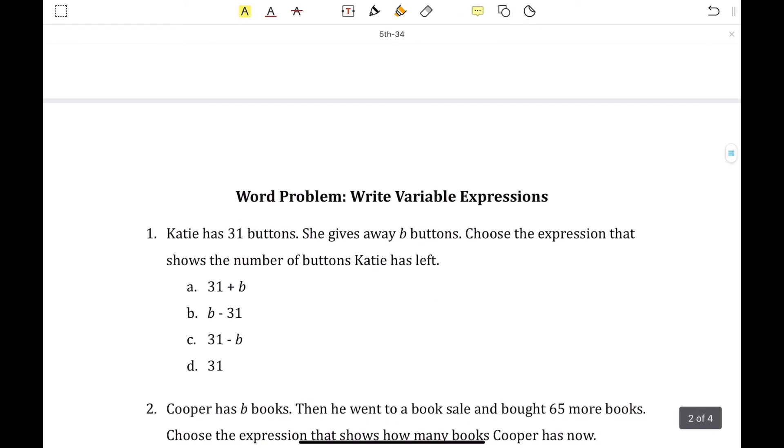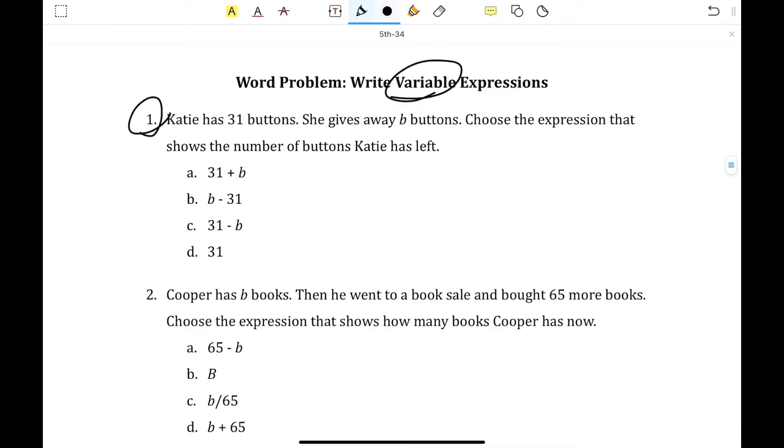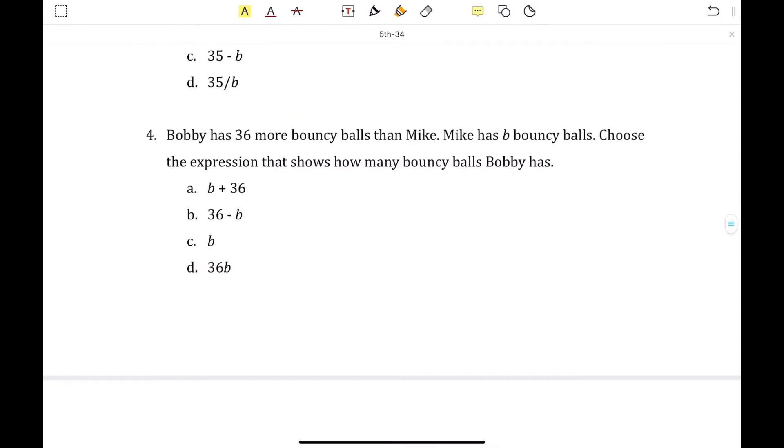Now let's go over the second section, which is word problem, writing variable expressions. So variable expressions, we're going to assume it deals with variables, and we're going to do number 1. Katie has 31 buttons. She gives away b buttons. Choose an expression that shows the number of buttons Katie has left. So she started with 31, and she took away b buttons. So the order of operation that you would use is subtraction. So you should get c as your answer. Pretty easy, the next 3 questions work the exact same way.